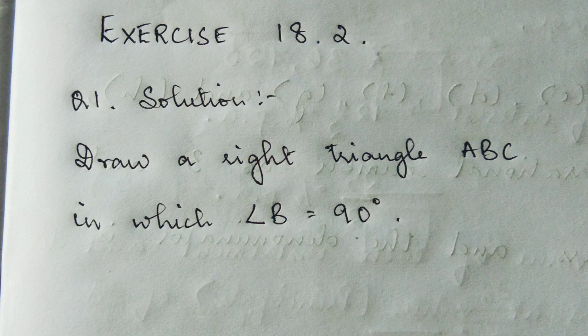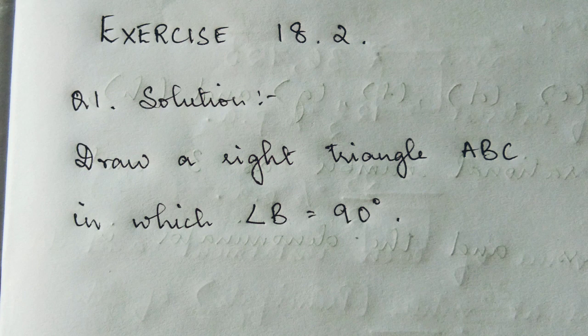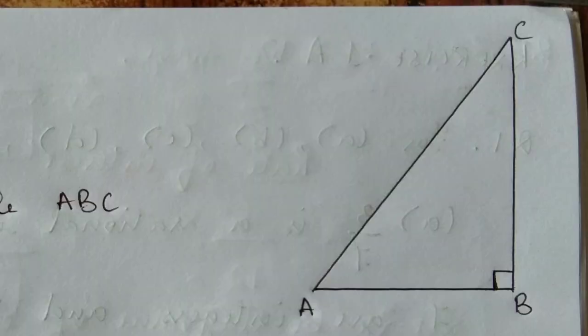The first thing we should always write is: draw a right triangle ABC in which angle B is equal to 90 degrees. You have to draw the triangle - you can draw it however you want. So angle B is 90 degrees.